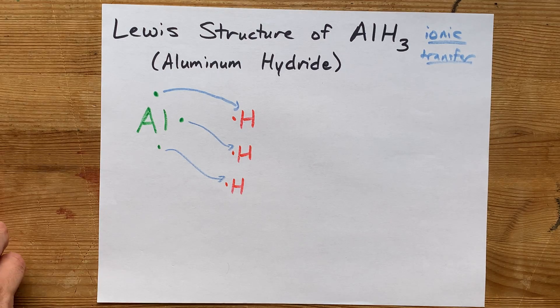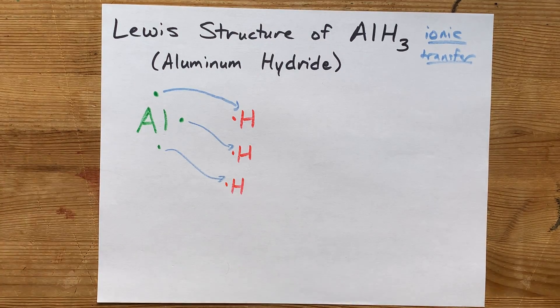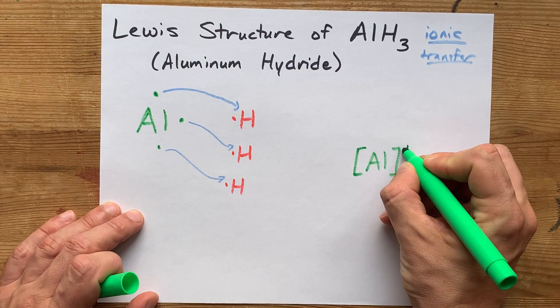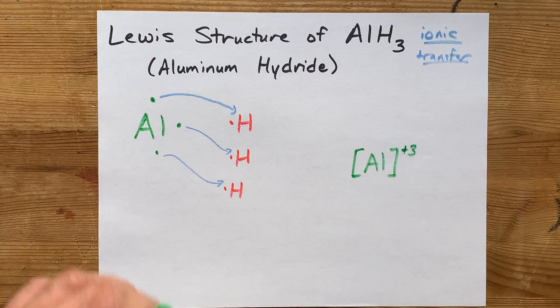What this means for the final product is that you have an aluminum atom that gave away three electrons. That's a plus three charge.